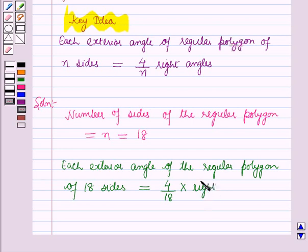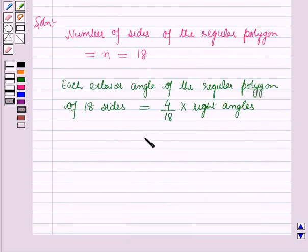Which is equal to 4 by 18 into 90 degrees. Now 9 into 2 is 18 and 9 into 10 is 90 and 2 into 2 is 4 so this will be equal to 20 degrees.